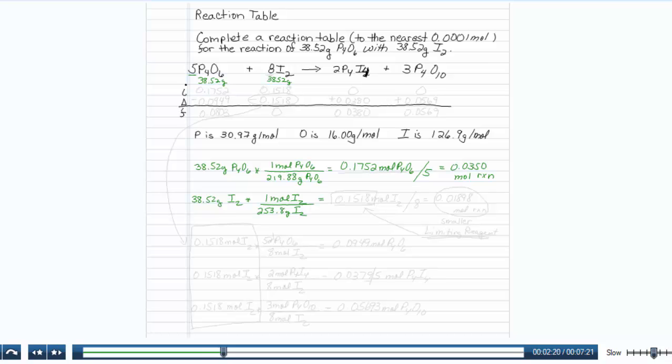Dividing that out gives us 0.1518 moles of I2. Once again, we'll divide by the coefficient in front of the I2, which is 8, and this tells me that I can run the reaction 0.01898 times, or moles of reaction.